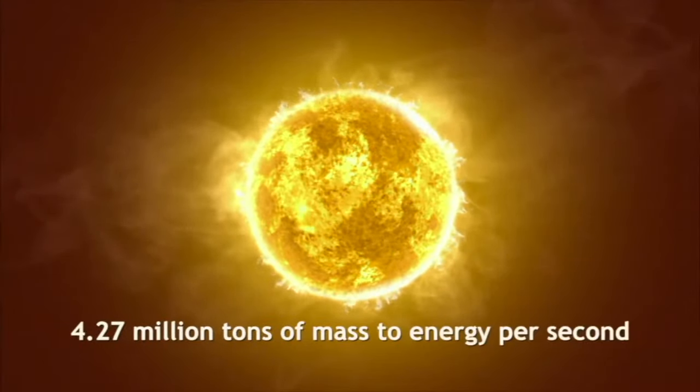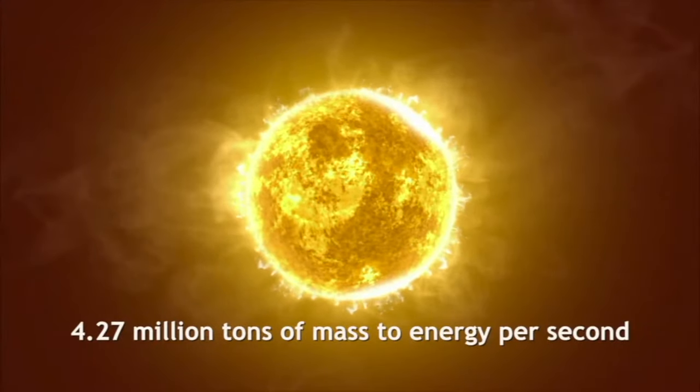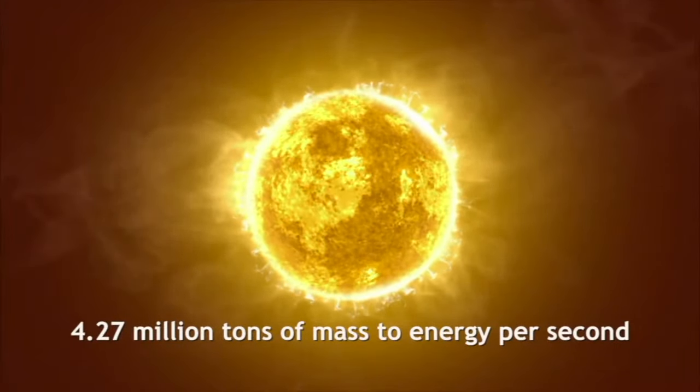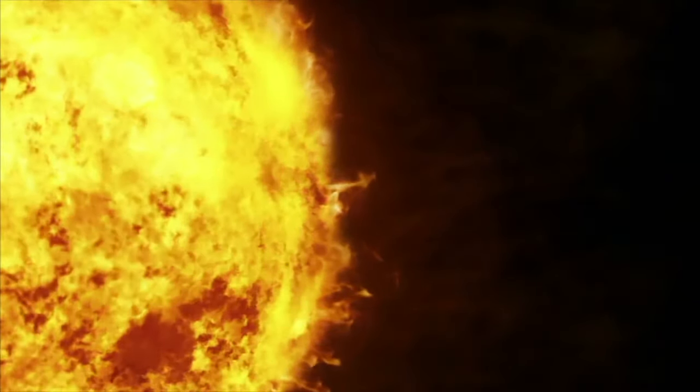The Sun converts 4.27 million tons of mass to energy every second. This mass is released as electromagnetic radiation in the form of high-energy atomic particles and photons. Many of these bounce around in the Sun, making it hot enough to sustain its fusion reactions.